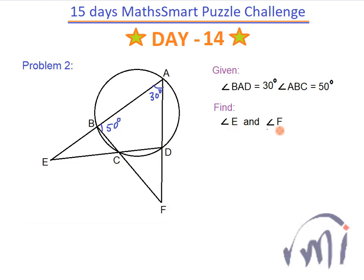We have to find angle E and angle F. ABCD is a cyclic quadrilateral where the sum of opposite angles is equal to 180 degrees. So since angle ABC is 50 degrees, the opposite angle will be 130 degrees. Now if we look at triangle AED, the sum of all angles has to equal 180 degrees — this is 130, this is 30, total is 160.